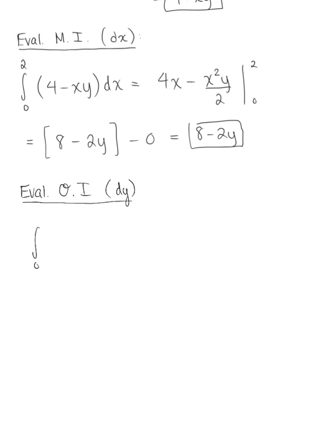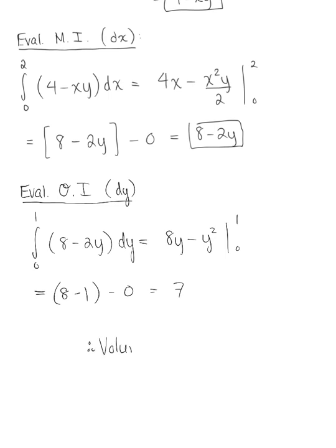This is the integral from 0 to 1 of 8 minus 2y dy, which integrates to 8y minus y squared from 0 to 1. This will be 8 minus 1 minus 0, which leaves us with a beautiful final answer of 7. Therefore, the volume of this solid region is 7 cubic units.